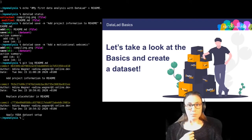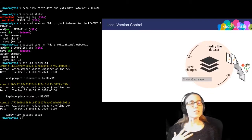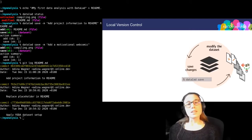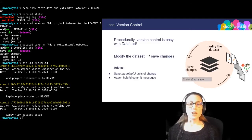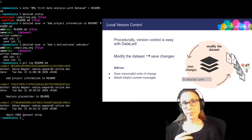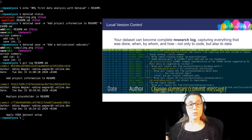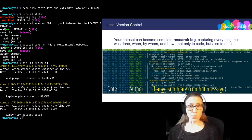Procedurally, version control is super easy with DataLad. You can modify the dataset and then save the changes with a single command. And if you only save meaningful units of change and attach helpful commit messages, then you can also grow a nice version history of everything that has been done. This version history is super useful because it can become a complete research log for you and others to find out what was done, when, by whom and how.